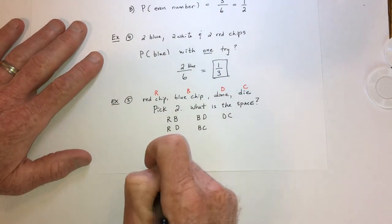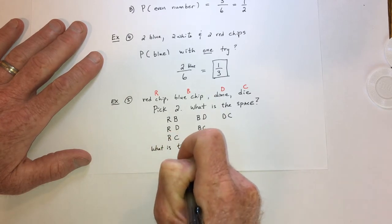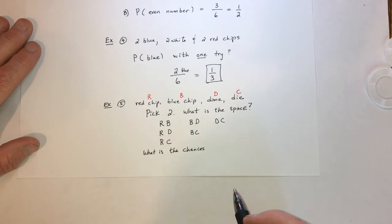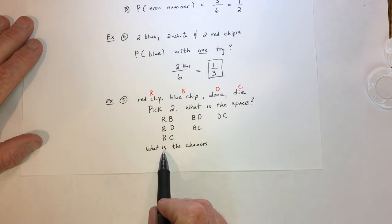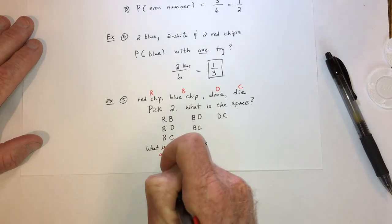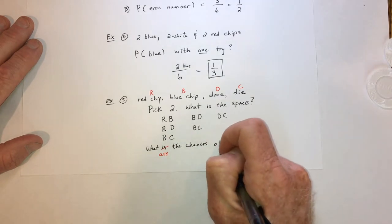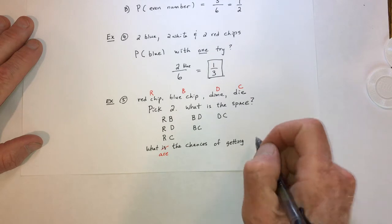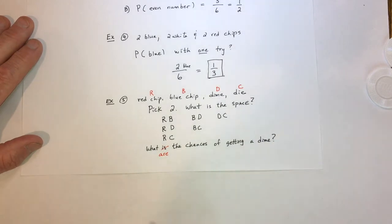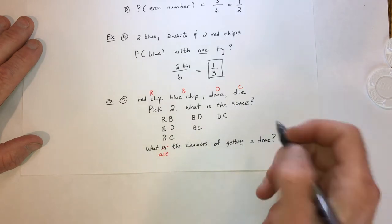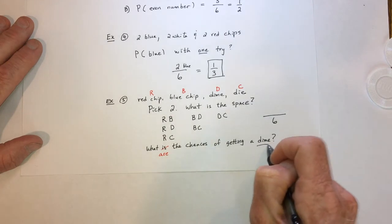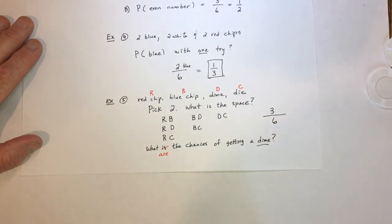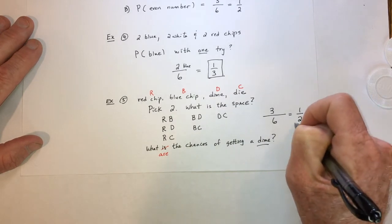The question asks: what are the chances of getting a dime? In total there are six possibilities, so six goes on the bottom. How many have a D for dime? There's RD, BD, and DC — that's three of them. So three out of six, which reduces to one-half.